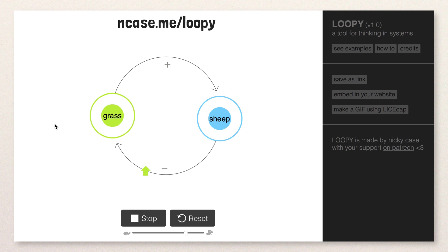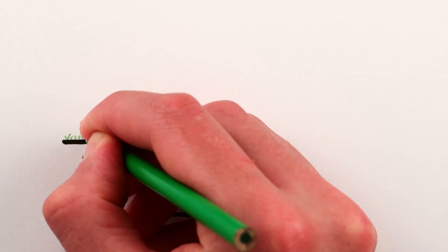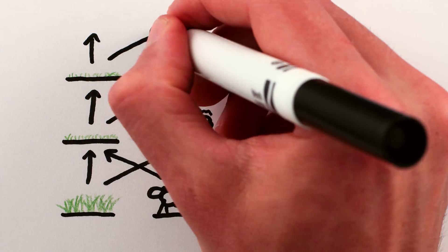From a causal point of view, this isn't actually a loop. It's more of a chain, where the amount of grass and sheep now affects the amount of grass and sheep next year, and the year after, and so on.